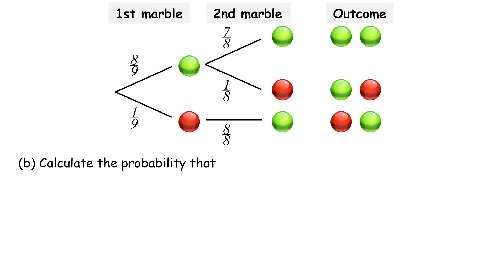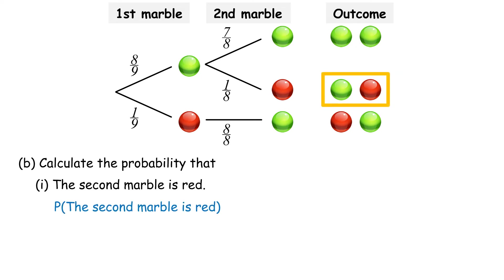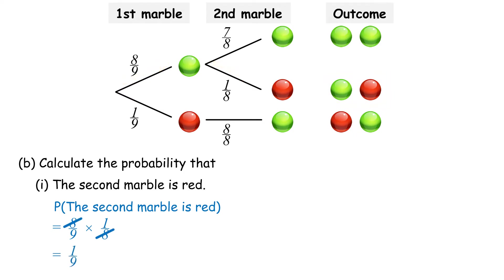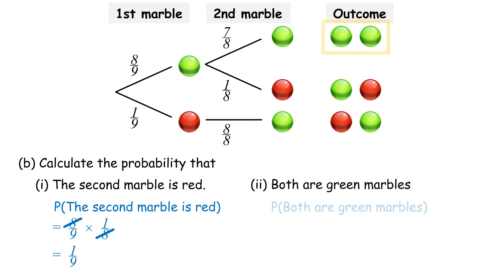B. Calculate the probability that: 1. The second marble is red: P(second marble is red) equals 8 over 9 times 1 over 8 equals 1 over 9. 2. Both are green marbles: P(both are green marbles) equals 8 over 9 times 7 over 8 equals 7 over 9.